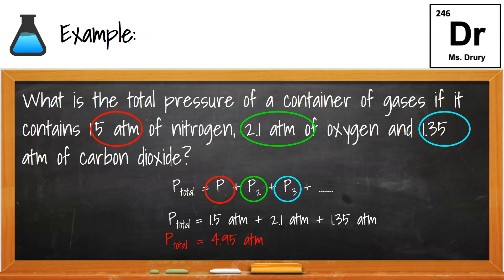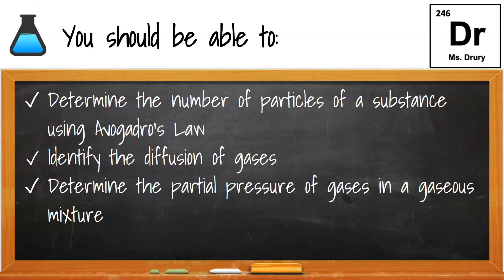Now technically for sig figs, when you add, you should go by least decimal places, so I would have rounded this to 5.0 atmospheres. At this point, you should determine the number of particles of a substance using Avogadro's law, talk about the diffusion of gases, and how the partial pressures on each gas add up.